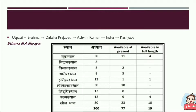Regarding its Utpatti (origin/lineage): Brahma, Daksha Prajapati, Ashwini Kumar, Indra, and then Kashyapa. Please have a look at the table for the Sthana and Adhyaya details.